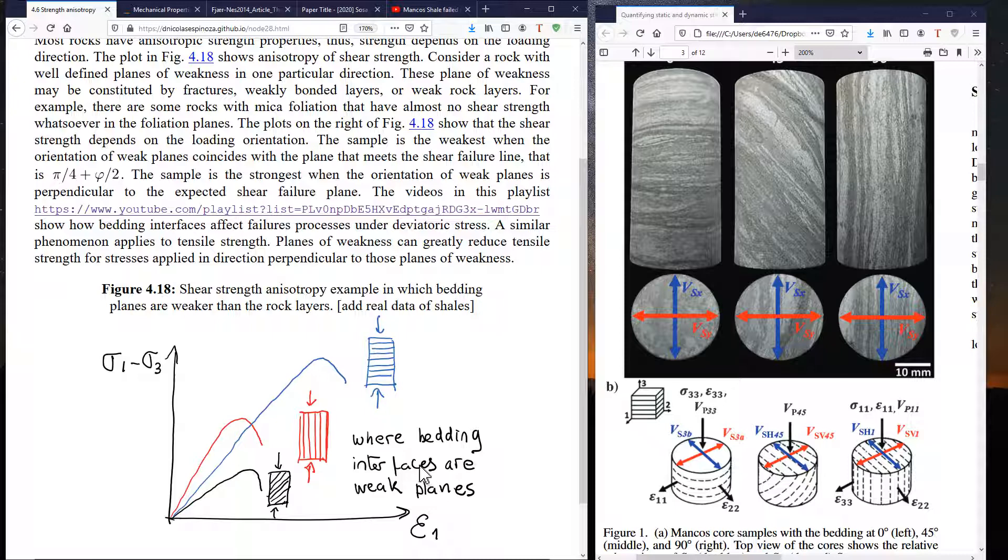the strength of such rock would be higher with loading in vertical direction than when loaded in horizontal direction. Because when loaded in horizontal direction, we might subject to tension some of these interfaces. But what about if we were to load one of these samples at an angle?